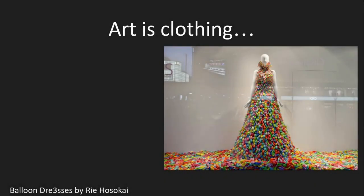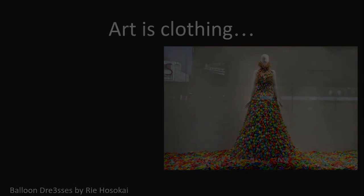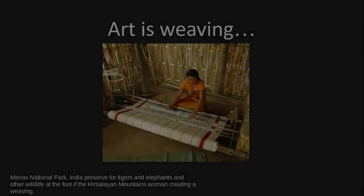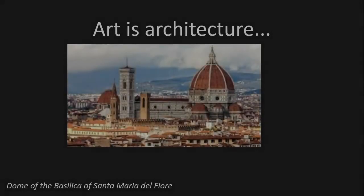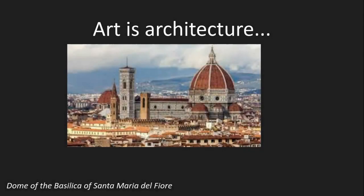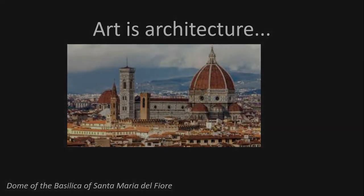Art can be clothing. This is unusual — this dress is made all out of balloons. Art can also be weaving, and that's working with strings and fibers. Art can also be architecture — that's making buildings. This is a huge, enormous church.